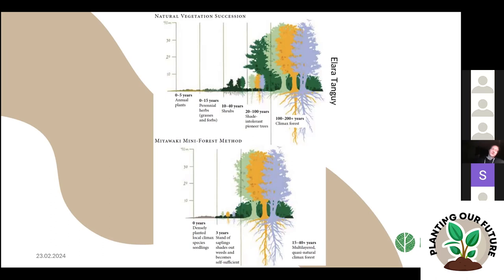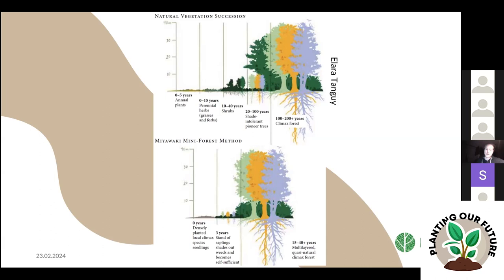This is why the talk covered ecological succession, pioneer and climax species, and potential natural vegetation — all foundational for understanding which local species to plant, and how to plan and carry out a tiny forest. The details of how to actually do this will be covered in the next presentation.